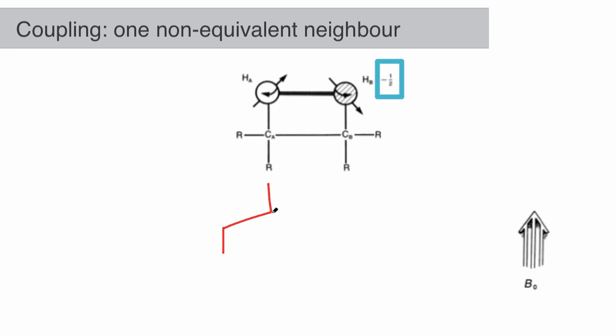The protons with spin -1/2 have a magnetic moment opposed to the spectrometer's magnetic field. The magnetic field experienced by the proton is decreased, so the proton's chemical shift will move to a lower frequency.